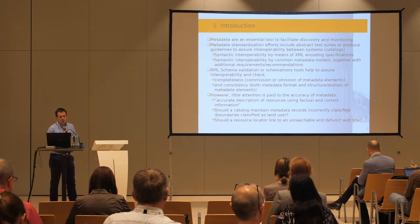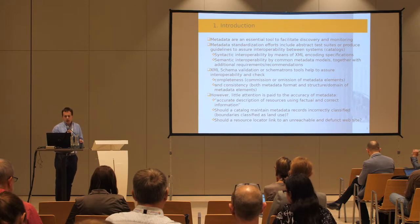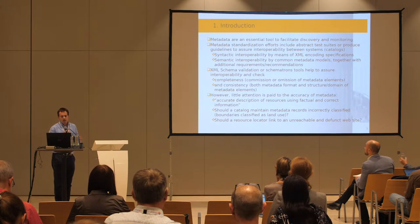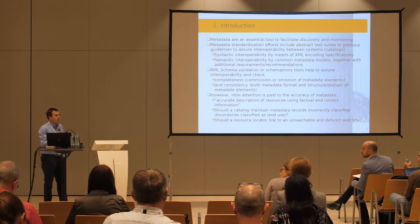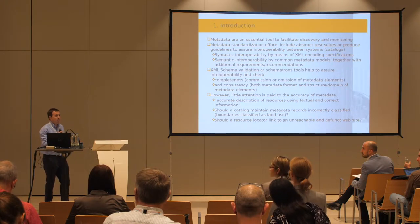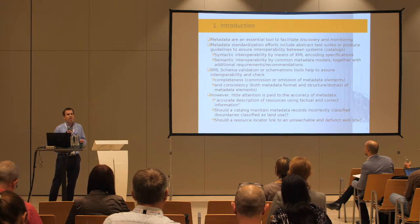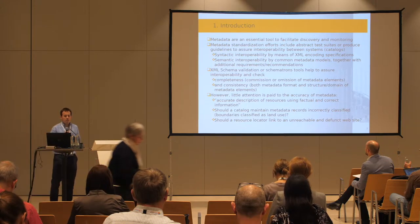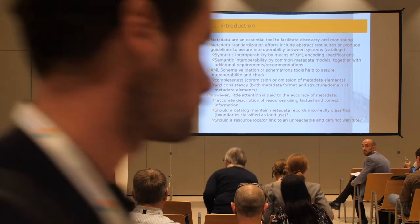However, little attention is paid to the accuracy of metadata. We don't check if the description of resources is using factual, correct, and current information. The question is whether a catalog should maintain metadata records that are incorrectly classified. For example, sometimes we can find administrative boundaries datasets classified as land use, or sometimes we have broken links in our metadata.